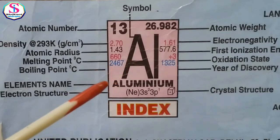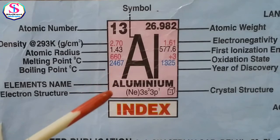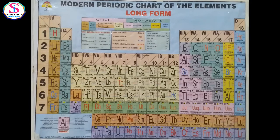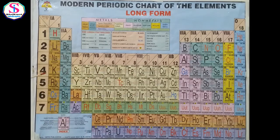In 1913, Henry Moseley, an English physicist, discovered that atomic number is the most fundamental property. The law states that the chemical and physical properties of elements are a periodic function of their atomic numbers. In the modern periodic table, horizontal rows are called periods — there are seven periods in total.